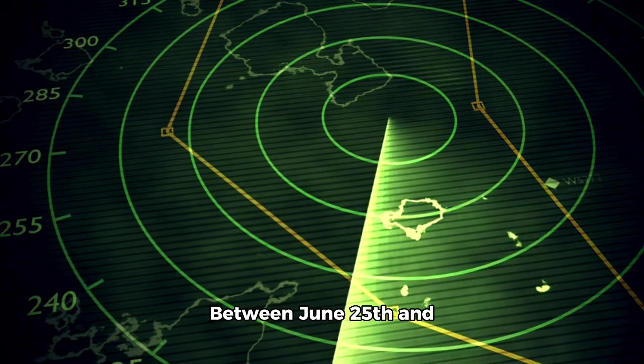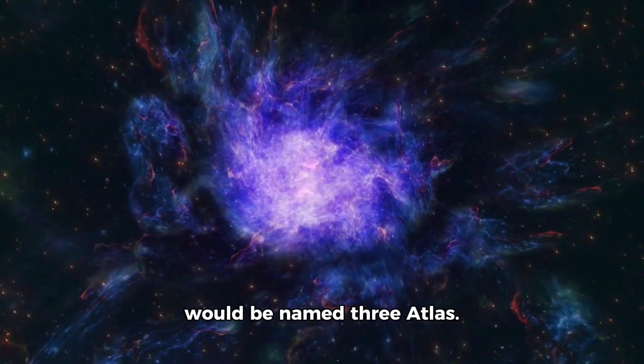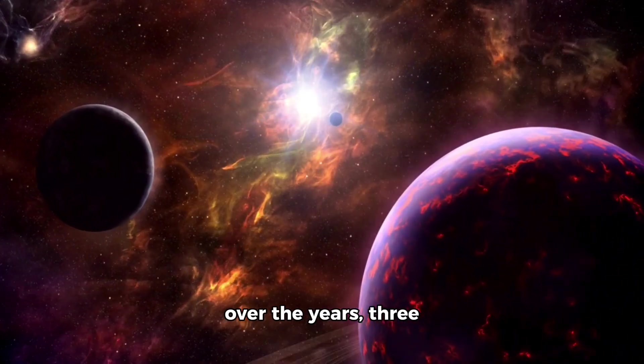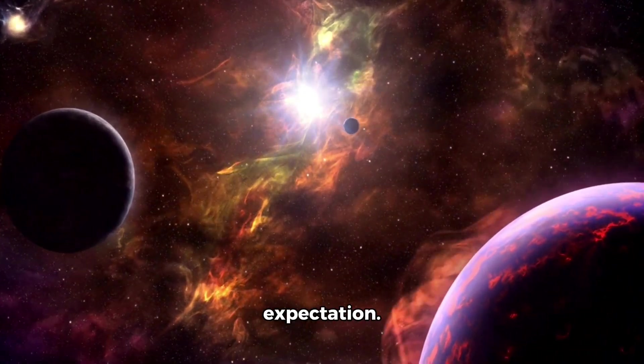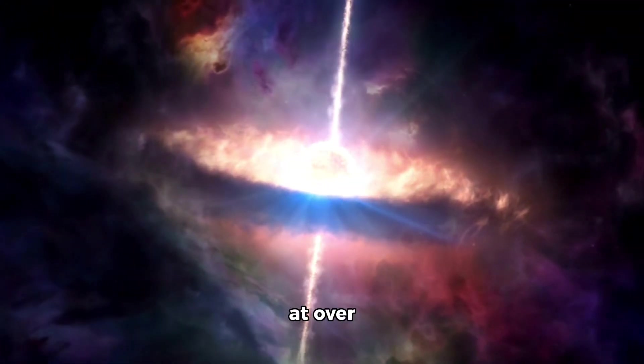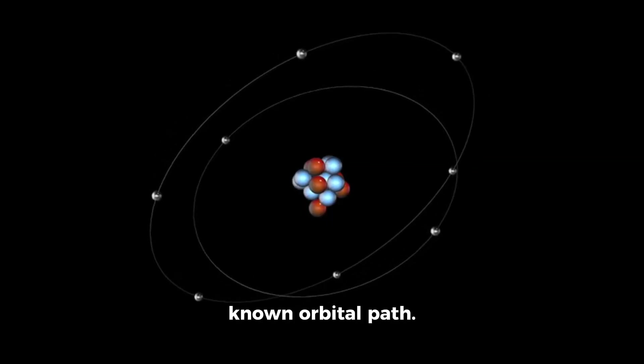Between June 25th and June 29th, the Atlas Tracking System locked onto it. A mysterious interstellar object that would be named 3i Atlas. But unlike the countless icy wanderers catalogued over the years, 3i Atlas defied every expectation. It was moving at over 152,000 miles per hour. Yet, it followed no known orbital path.